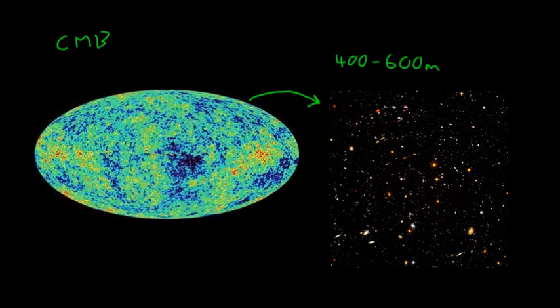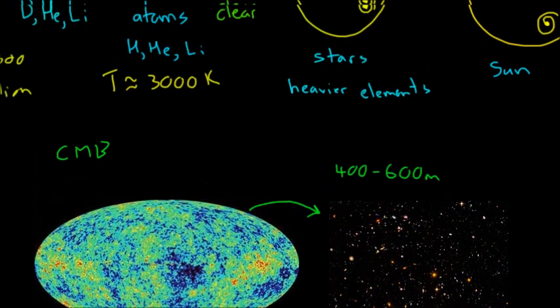And we can look at this structure that we see in these galaxies and match that up with the predictions that we have from computer simulations of the Big Bang. And we find that they match quite well. So looking at the large scale structure of galaxies and clusters of galaxies provides more evidence that the Big Bang actually happened.